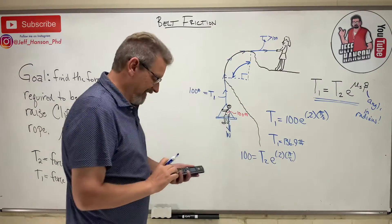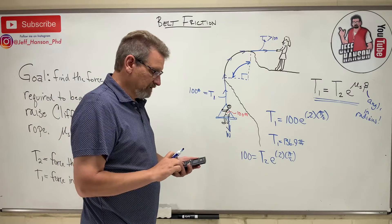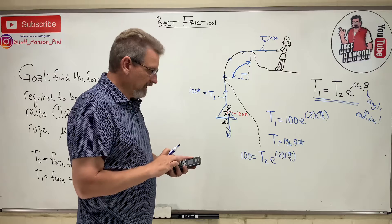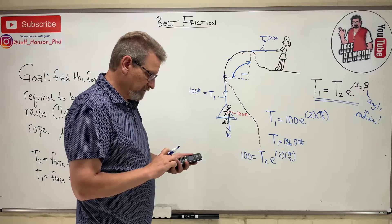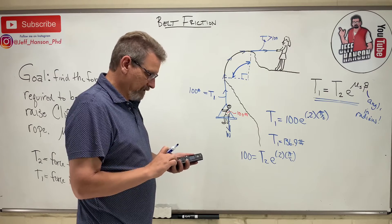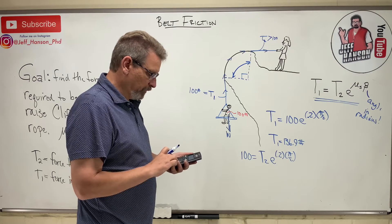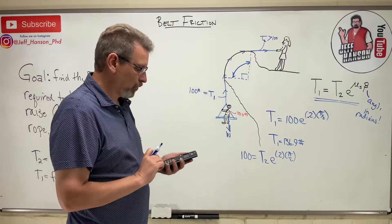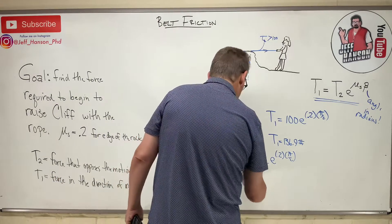So now it's 100 divided by - I'm going to put this all in parentheses - e to the 0.2 times pi divided by 2, parentheses, big close parentheses, equals 73.04.